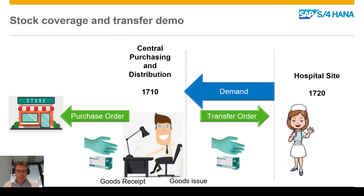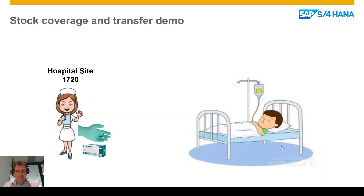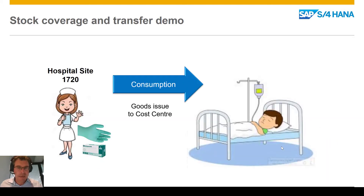Just to prove that point, let's look at the stock register for that particular item — and we find we don't have any stock because we've issued it all out. To finish the story: the demand went across, we raised a purchase order and did the goods receipt for it, issued it out from the central distribution, it went into transit, got goods receipted at the hospital site, and finally it was consumed against the cost center — in my case scrapped, but it could be any cost center for consumption.